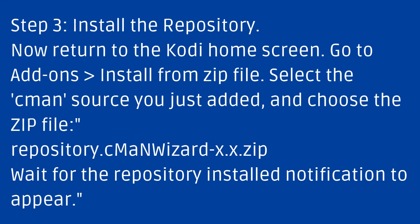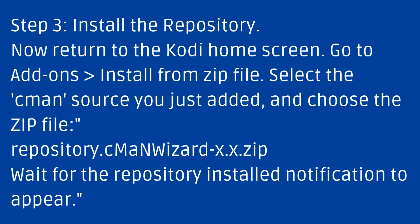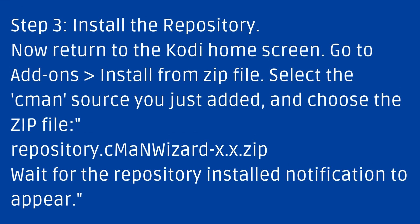Step 3: Install the repository. Return to the Kodi home screen. Go to Add-ons, then Install from Zip File. Select the Command source you just added and choose the zip file — the C-Mine Wizard repository zip. Wait for the repository install notification to appear.